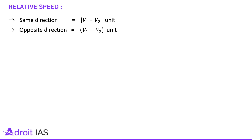When two vehicles are moving in the same direction, their relative speed is considered as the difference of their speeds. And when two vehicles are moving in opposite directions, their relative speed is considered as the sum of their speeds.